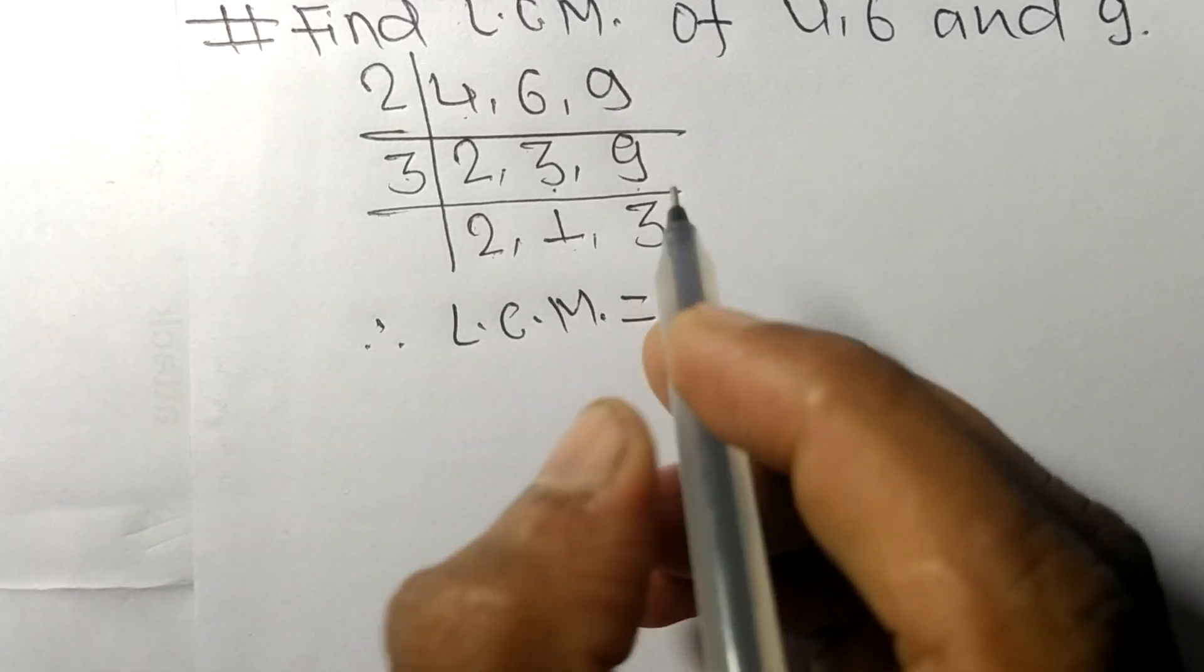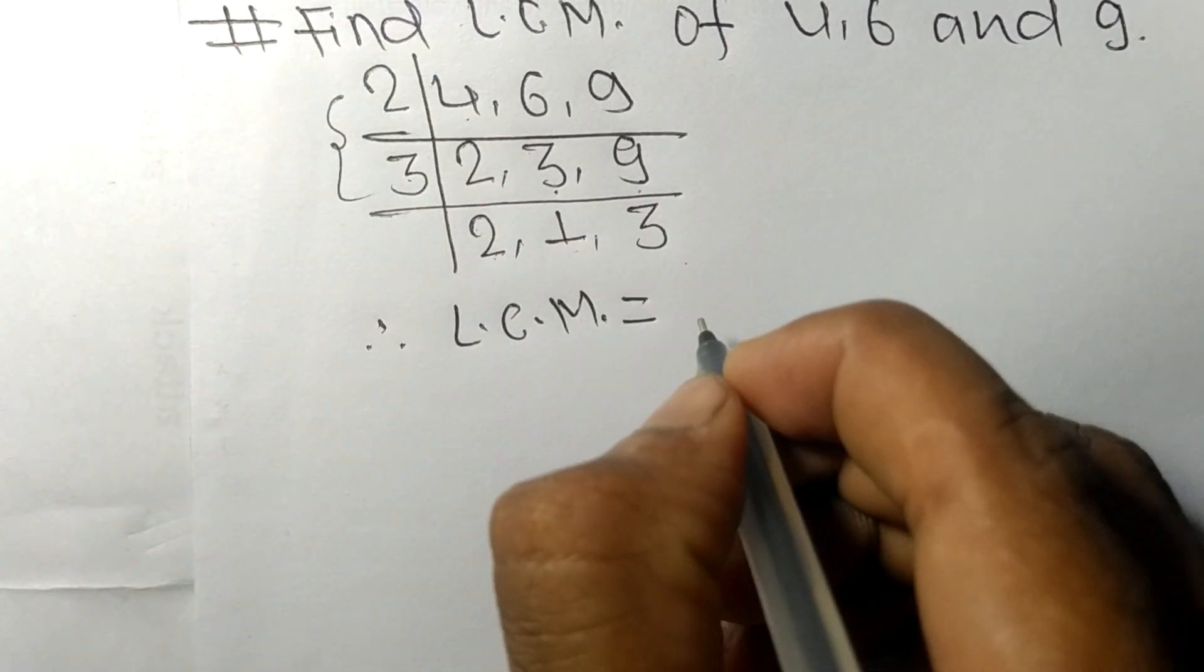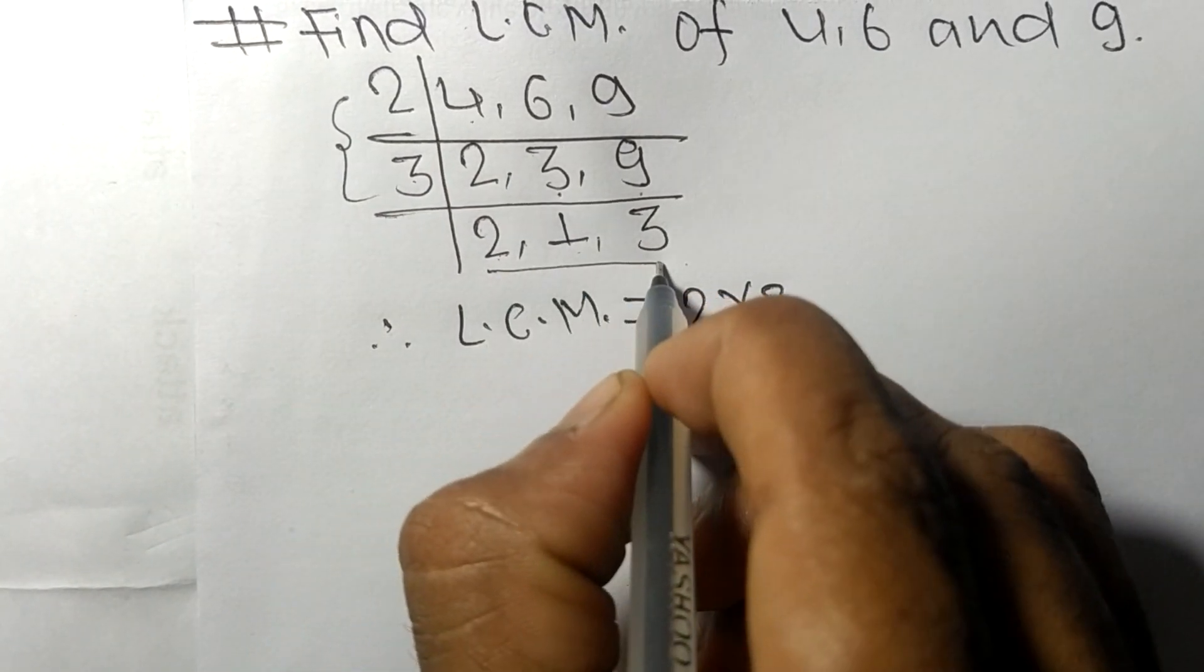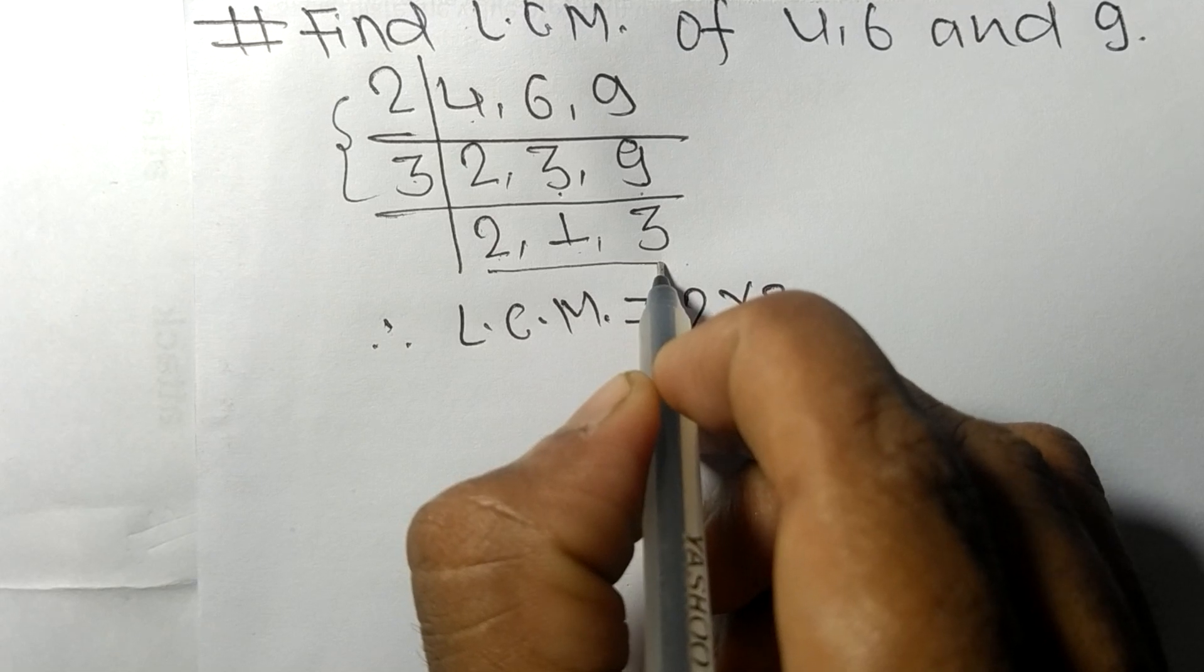LCM is equal to, from this side it is 2 and 3. From here we choose the numbers greater than 1, that is 2 and 3.